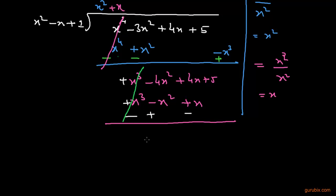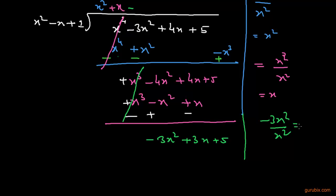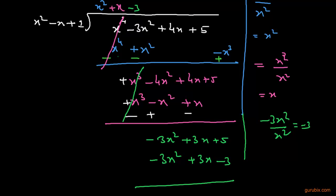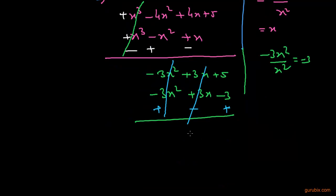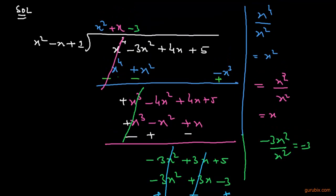To find the next term in the quotient, we divide -3x² by x², giving -3. We multiply -3 by the three terms of the divisor to get -3x² + 3x - 3, then change the sign. The -3x² terms cancel, and we are left with a remainder of 8.